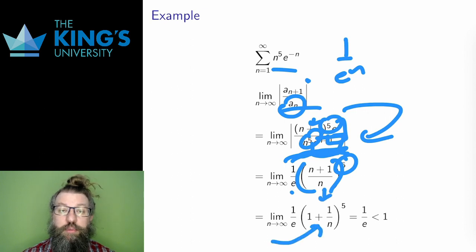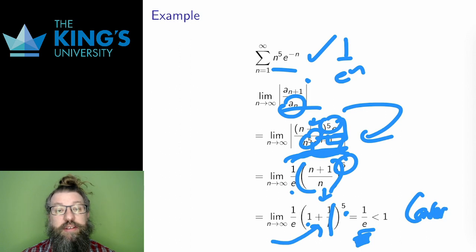The 1/n term will disappear as n goes to infinity, 1/n goes to 0. So the bracket will give in the limit 1 to the 5, and 1 to the 5 of course is just 1, so the limit, all told, of the ratio of the terms converges to 1/e. And 1/e is less than 1, and the ratio test says that if the limit of the ratio of the terms is less than 1, the series is convergent. Therefore, this series converges.